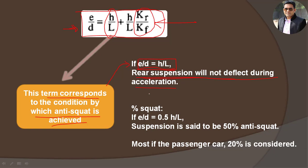Regarding the percentage of squat: if the ratio E/D equals, for example, 0.5·(H/L), that means the suspension is said to be 50% anti-squat. If this value becomes 1, we can assume fully squat geometry. If the value is 0.5, that means it is 50% anti-squat geometry. In most passenger cars, manufacturers design for 20% anti-squat geometry only.